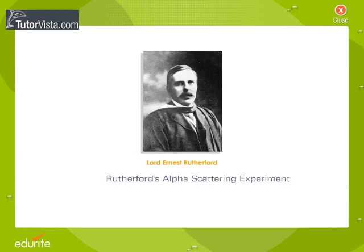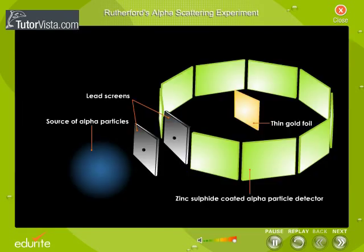Rutherford's Alpha Scattering Experiment. The credit for the discovery of the nucleus of an atom goes to a British physicist, Lord Ernest Rutherford. Shown here is the diagrammatic view of the famous gold foil experiment conducted by Lord Rutherford. Rutherford bombarded an extremely thin foil of gold of a few atoms in thickness with fast-moving alpha particles.